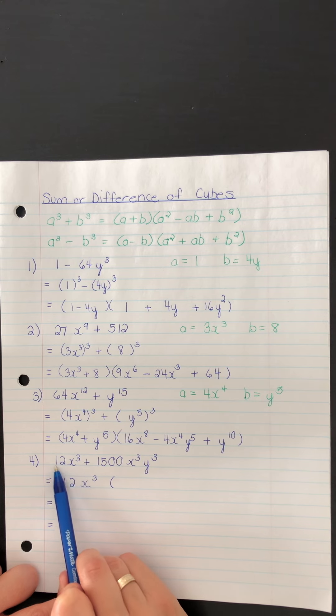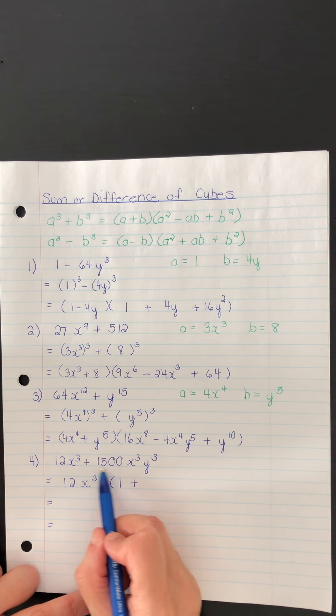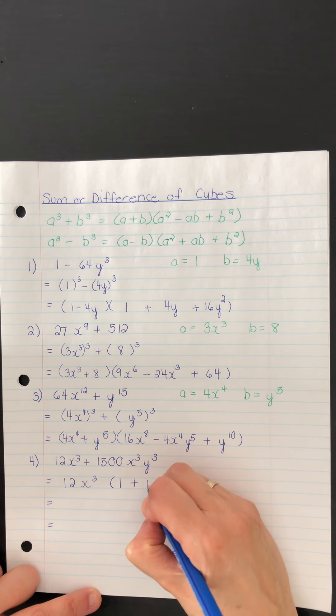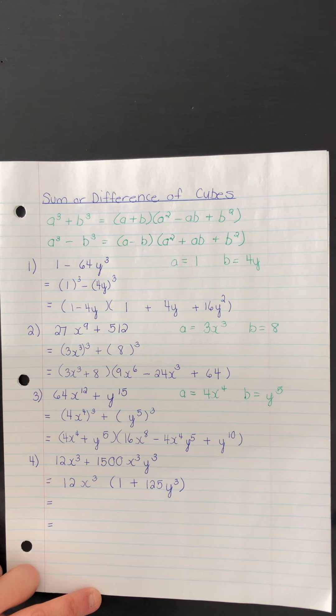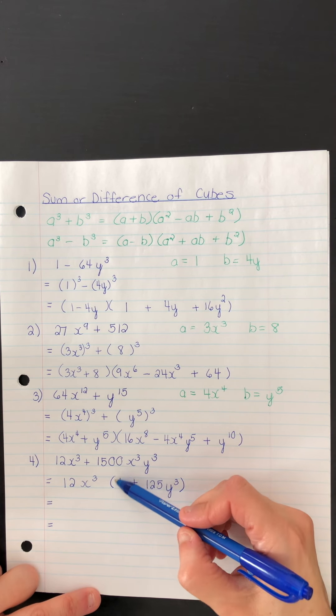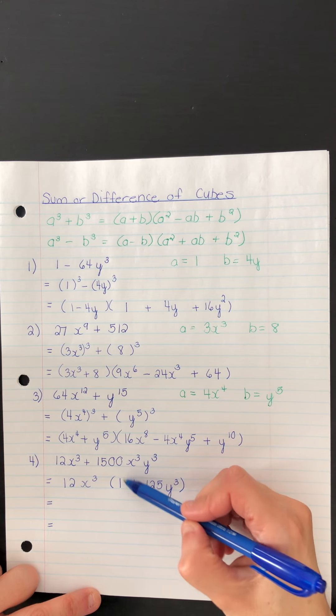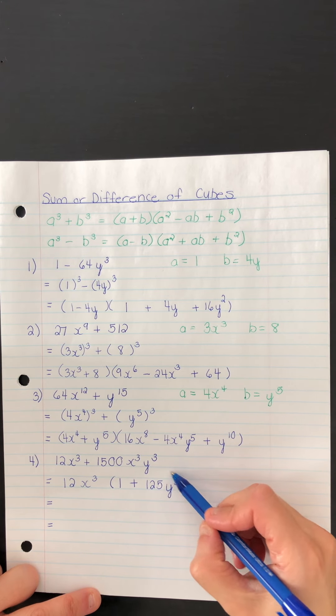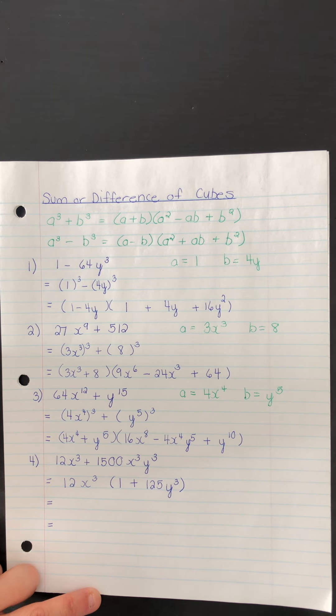When you divide this first term by 12x cubed, you will have 1, 125y cubed. Okay, before you continue, check that. If you were going to open this up using multiplication, you should get back the previous line. Now take a look at these terms. 1 is considered a perfect square. It's also considered a perfect cube. The exponent is divisible by 3, and 125 is the cube of 5.